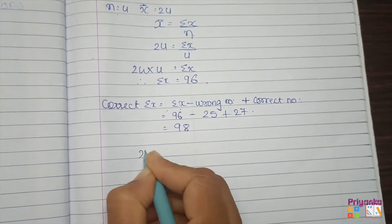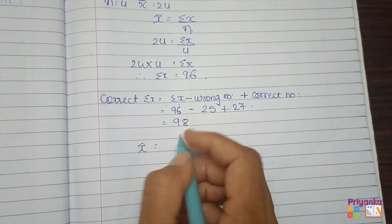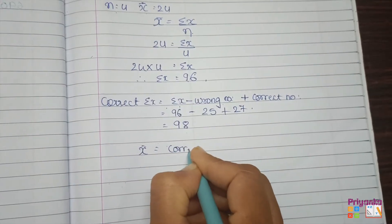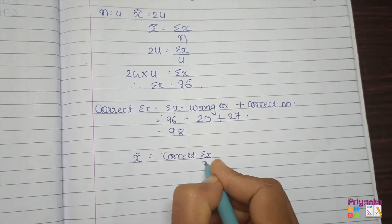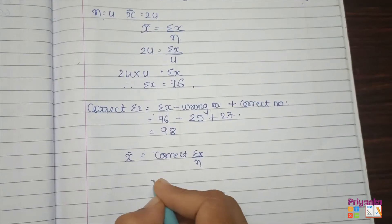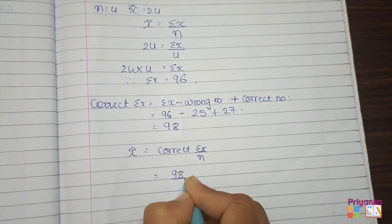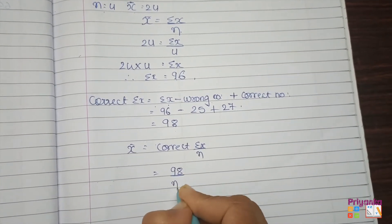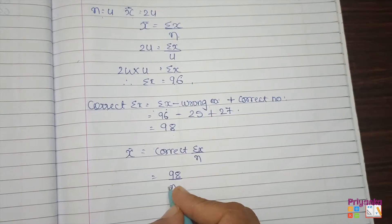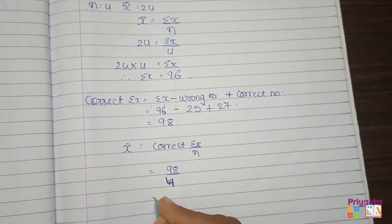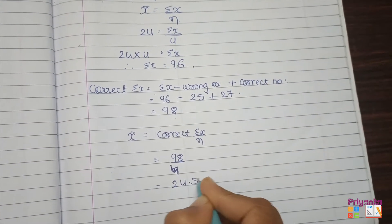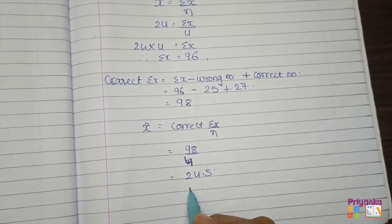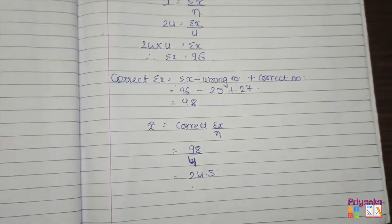Now we find the corrected mean: correct mean = correct Σx / n = 98 / 4 = 24.5. The correct mean is 24.5 years. Since 24.5 is less than 25, they can still participate in the race.